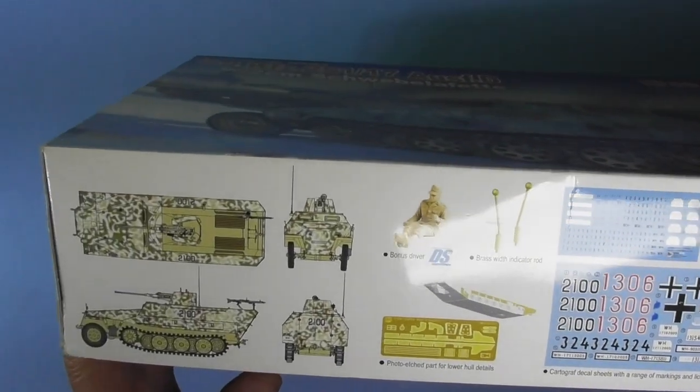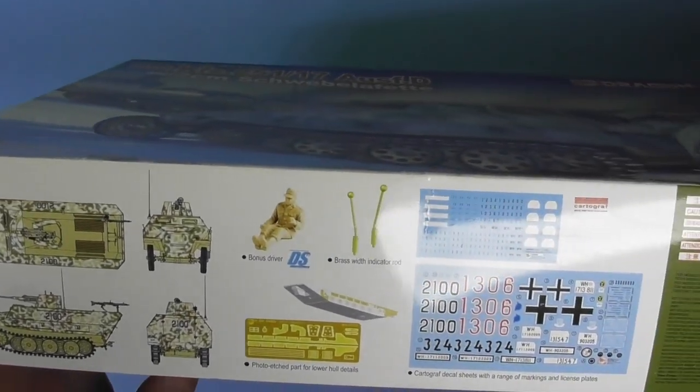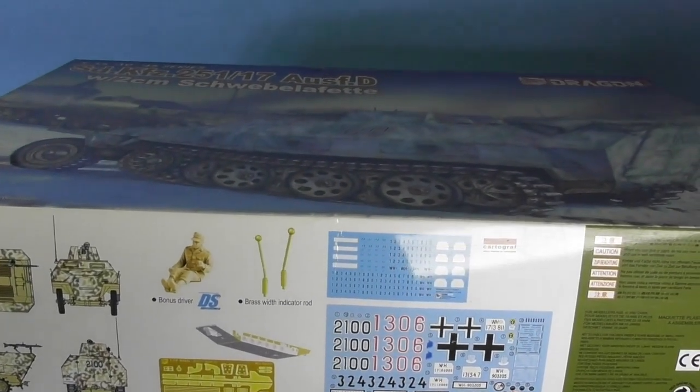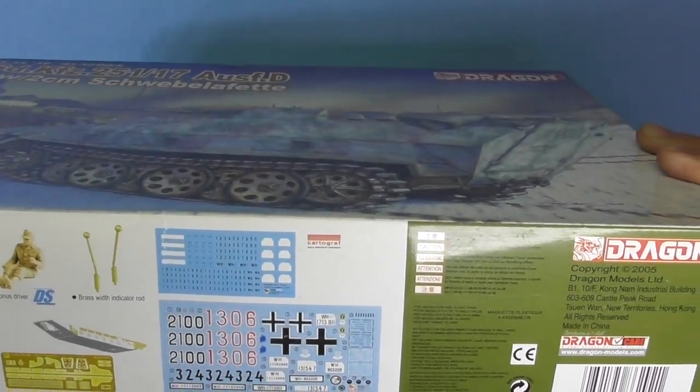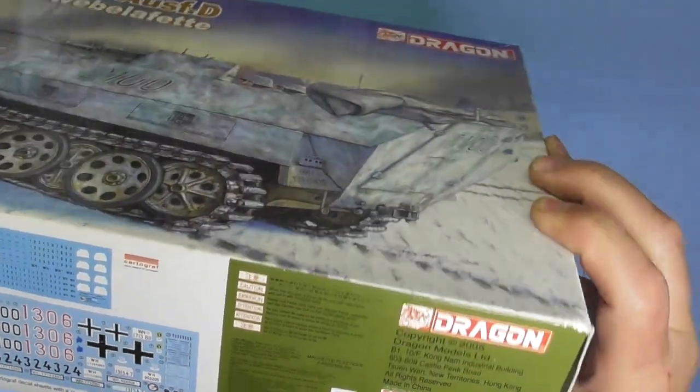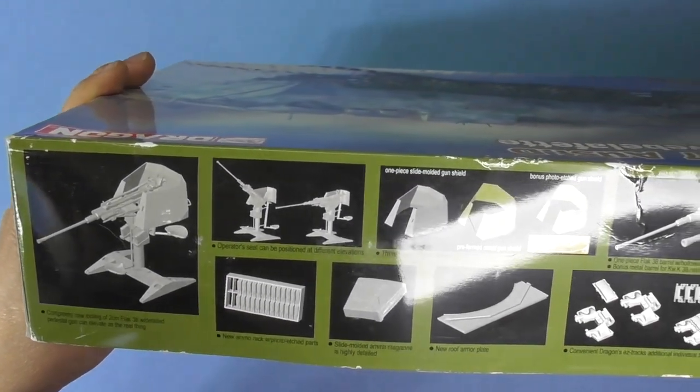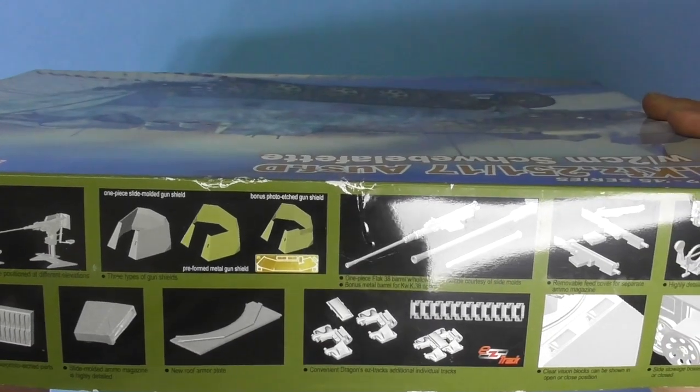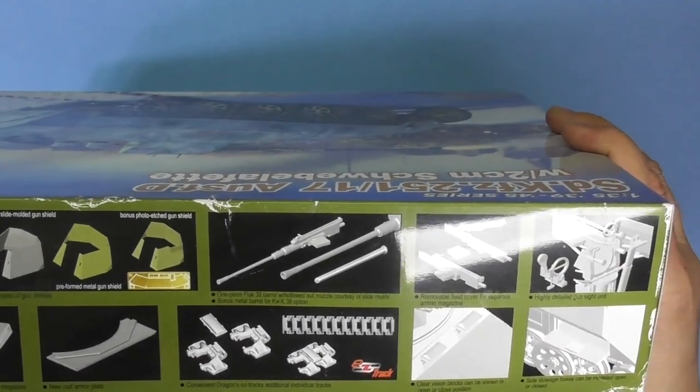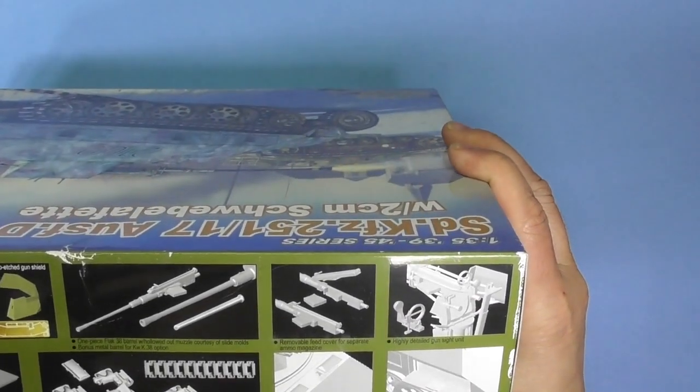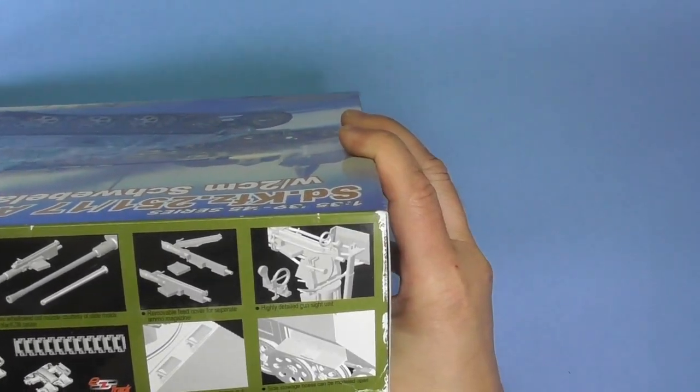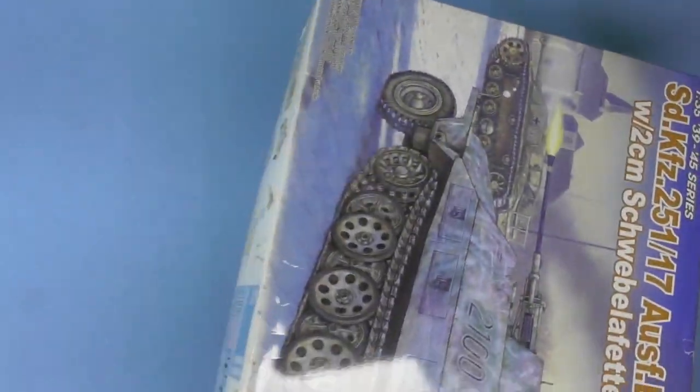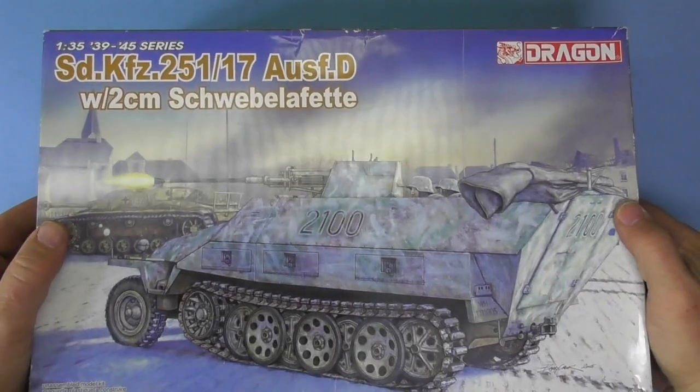So this is a 2005 kit. These are what you get in it. Color scheme. Some photo etch. Bonus driver. Brass rod indicators. Decals. My cartograph. There's some CAD drawings of what it looks like. You get that photo etch gun shield that's already built up. You get a metal barrel. Yeah, you get a metal barrel. And you get the classic magic tracks.